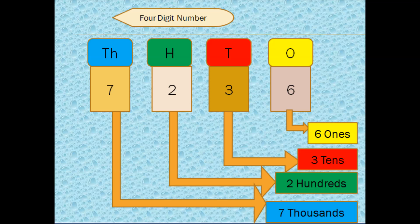The place value of 3 is 3 tens or 30. The place value of 2 is 2 hundreds. The place value of 7 is 7 thousands.